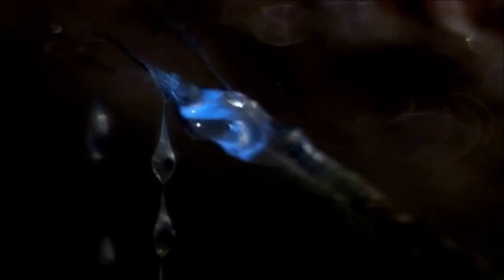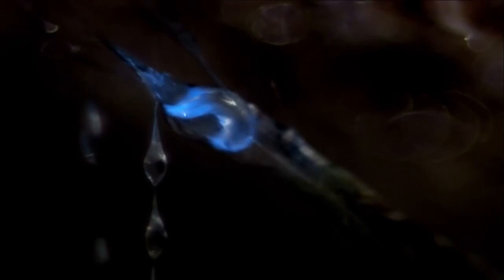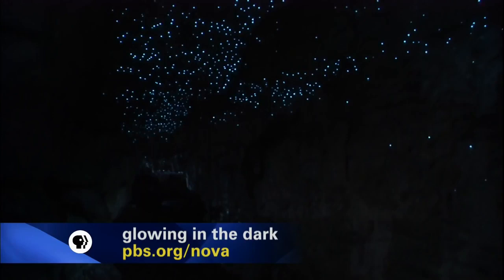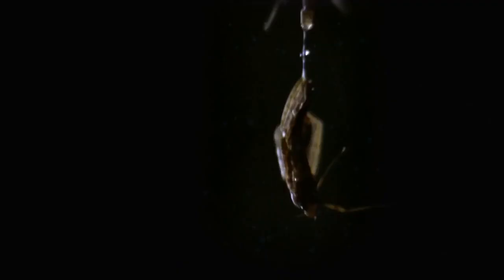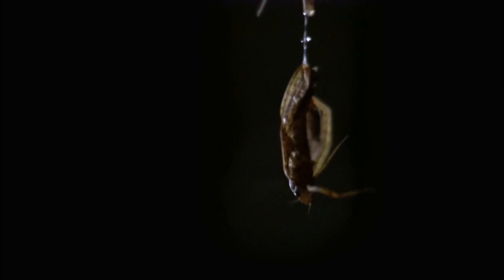Take the glow worm, for example. Like angler fish of the deep, thousands of these fly larvae light up the roofs of these caves in New Zealand like the night sky to lure in a meal. The starry ceiling fools prey like flies and moths, which are attracted to the light. As they fly upwards, they get trapped by the glow worm's sticky, thread-like snares.